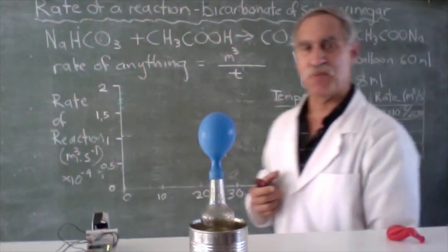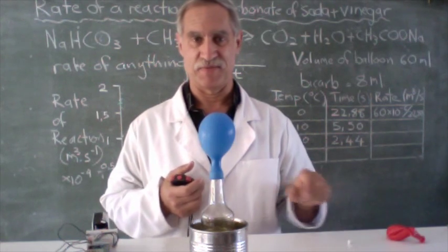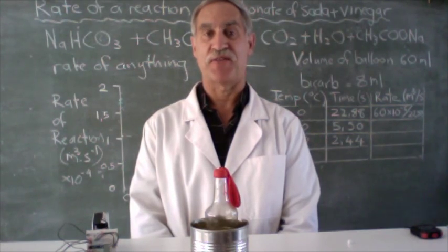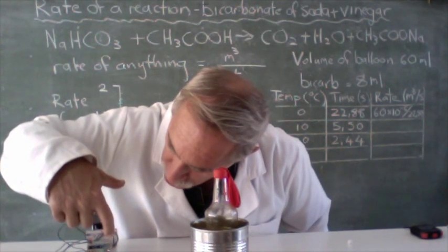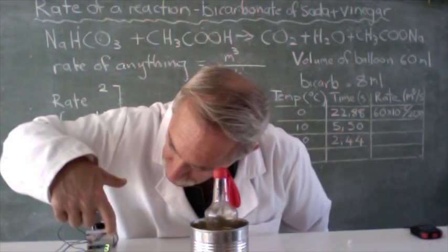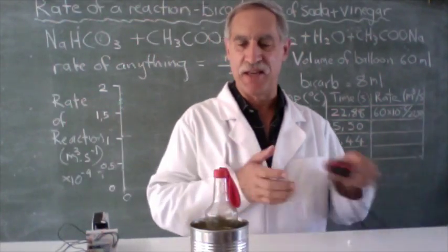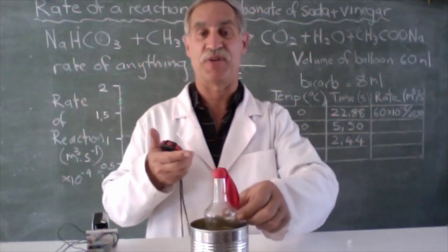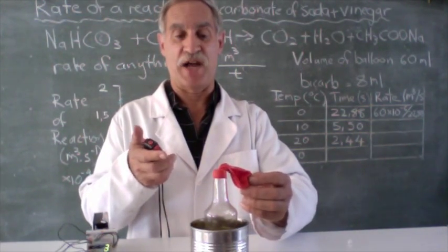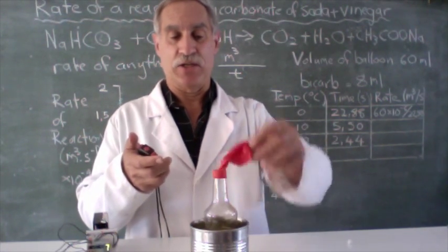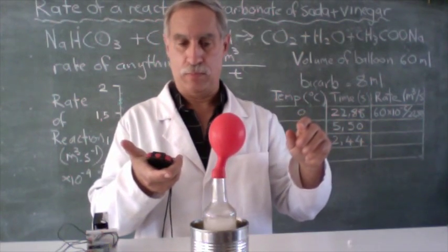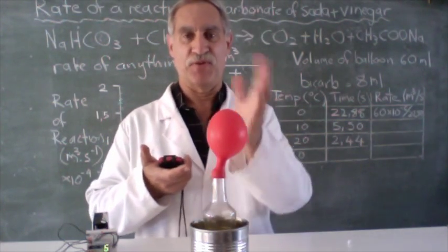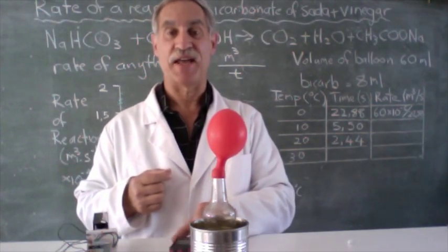And we have one last measurement and that is the reaction at 30 degrees. And for our last measurement, we're going to measure how quickly this reaction goes at 30 degrees Celsius. Let's check our temperature. 30.909. So we are on 30. Are we ready? Look at our results. 22.5, 2.44. What do we think it's going to be at 30? I think we're going to have to be quick. Let's try it. On our marks, get set, go. And that was 1.78 seconds for the balloon to lift up straight. 1.78 seconds.